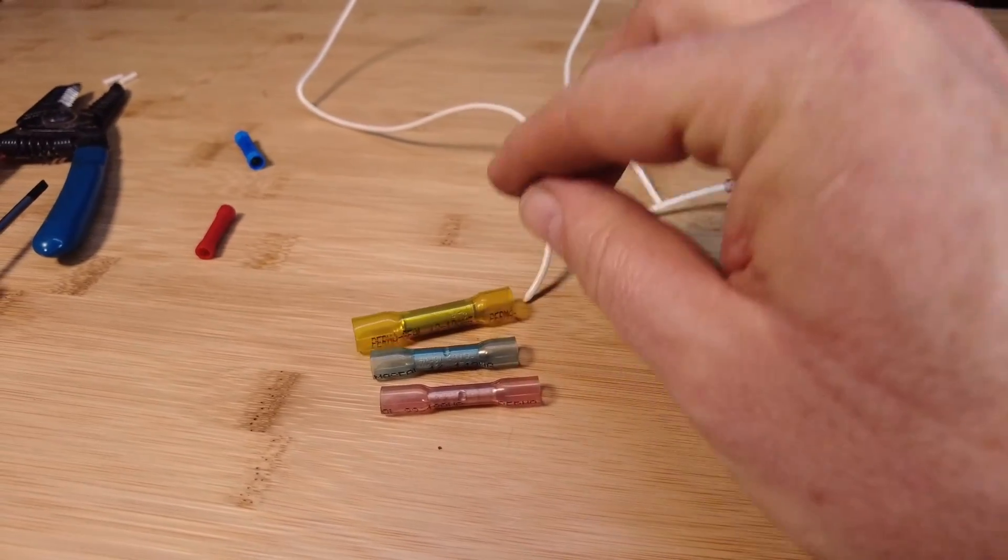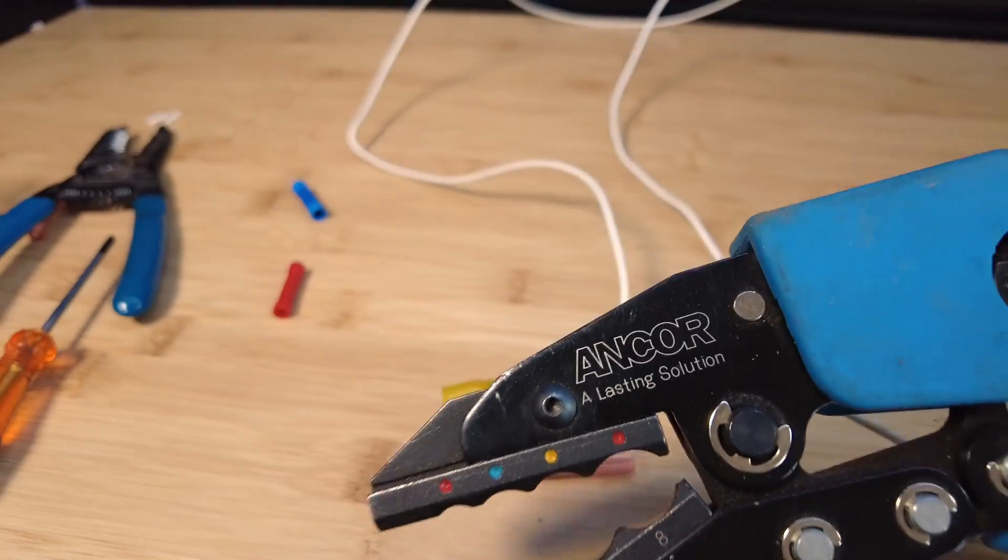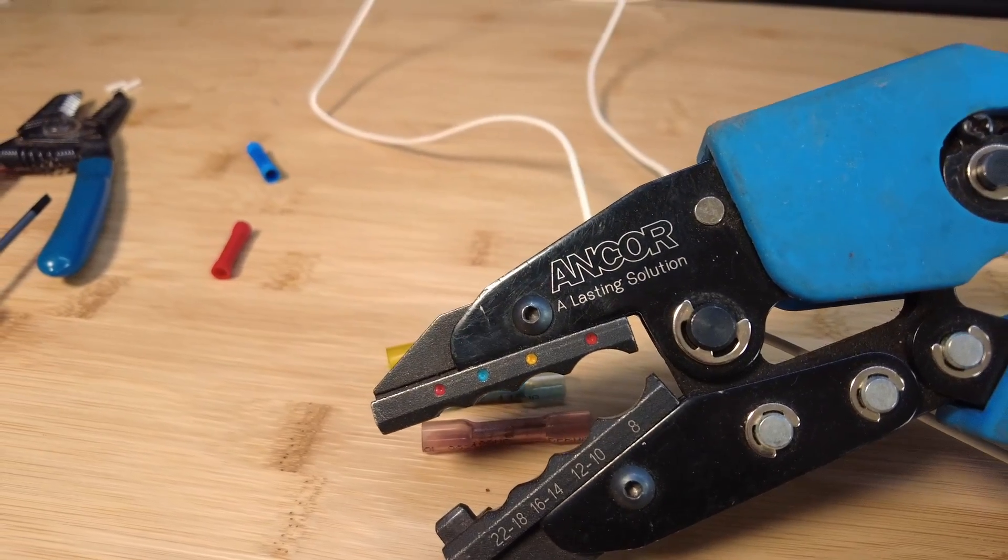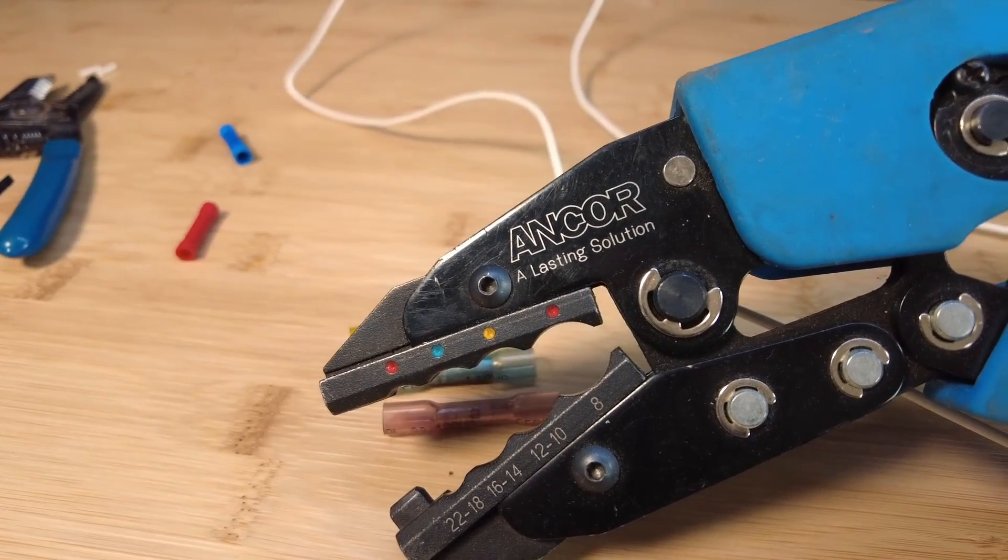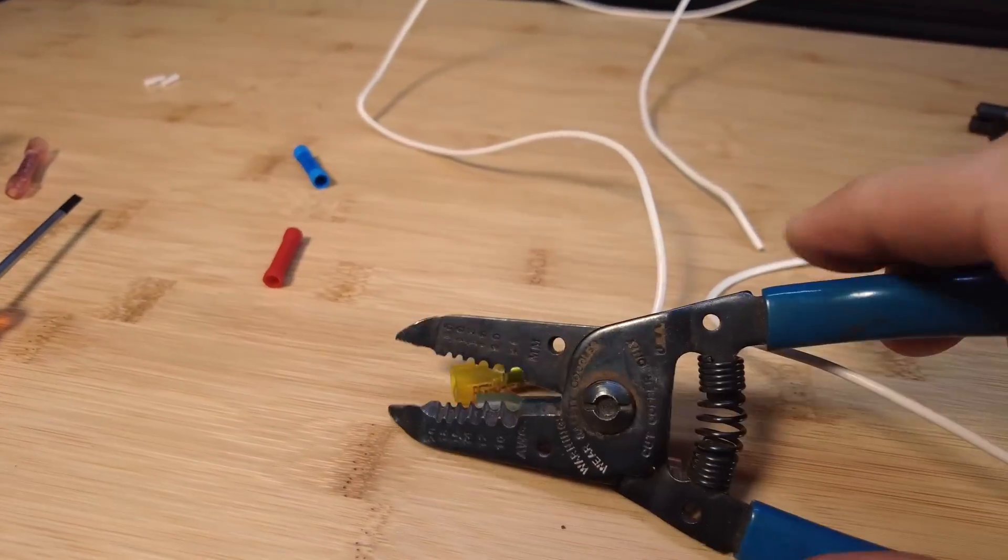And it's written right on there. But the crimp connector colors are also correlated to the appropriate color dot. So you use the right pair of jaws on the crimper.